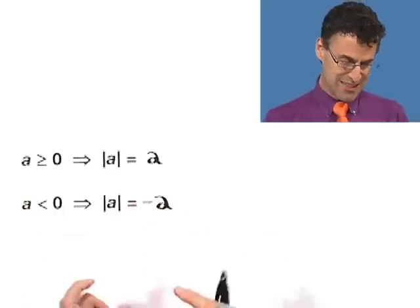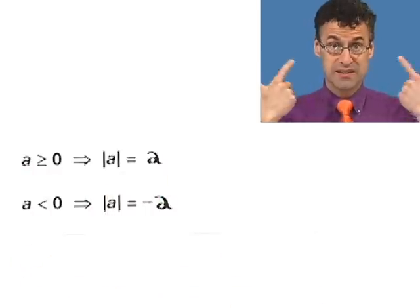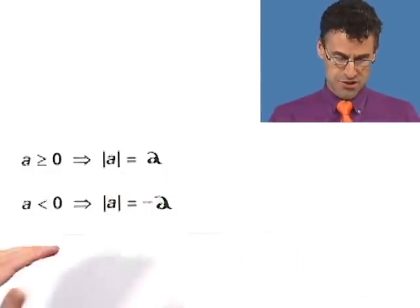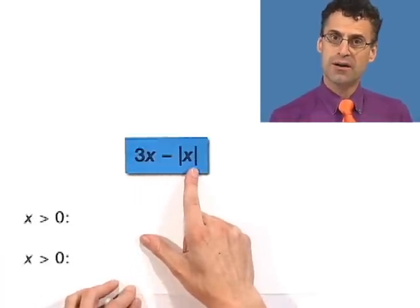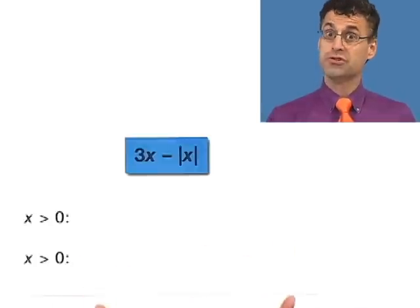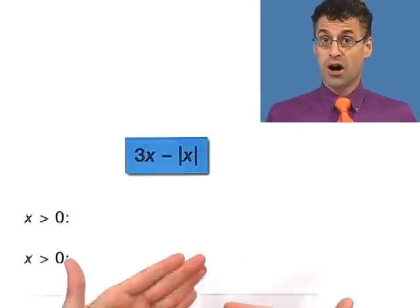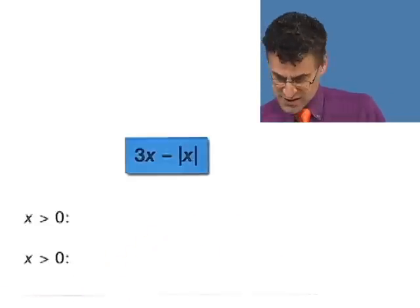That's the official definition, but really the thinking is what's important — that the absolute value is measuring distance, and distance is never, never negative. So let's take a look at an expression I want to simplify: 3x minus the absolute value of x. I want to see if we can simplify that. We have to consider two cases, because we don't know if the unknown x is positive, zero, or negative.